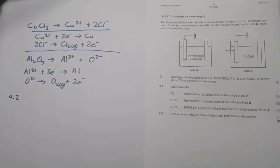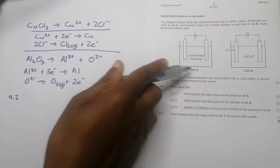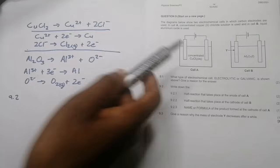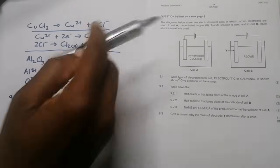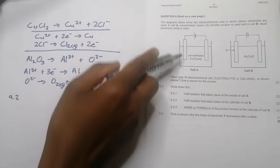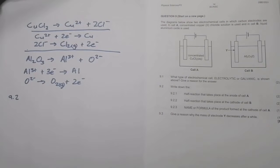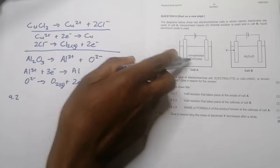In 9.2, they say write down the reaction that takes place at the anode of cell A. So this is cell A. Remember, the anode, that is where oxidation takes place. And remember, oxidation on the electrolytic cell takes place on the positive side of the cell.